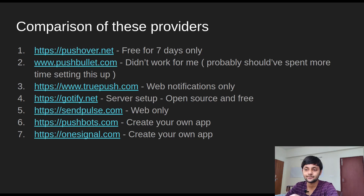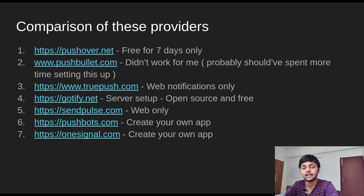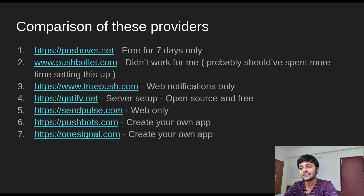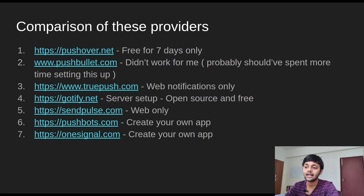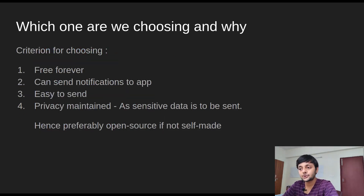I tried setting Push Bullet up but it didn't work for me, though I only spent five to ten minutes on it since I had to test many services. Then there's TruePush — web only. Gotify is open source, written in Go, and you have to set up a server for it. It's free and has an app on both the Play Store and App Store. Then there's SendPulse — web only. PushBots and OneSignal require you to create your own app and add their SDK, which seemed like too much work just to get a push notification.